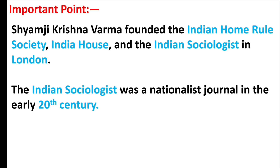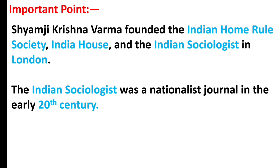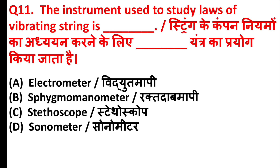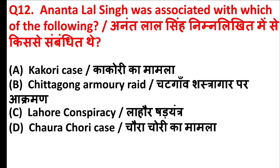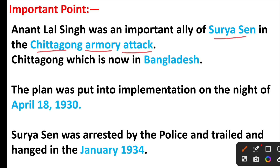The raga Miya Malhar was created by — ? The right answer is option A — Tansen. Tansen was one of the Navaratnas of Akbar and received the title 'Miya,' meaning a learned man. Tansen joined Akbar's court at the request of Raja Ram Chandra and died in Agra in 1586. The journal 'Indian Sociologist' was founded by — ? The right answer is option A — Shyamji Krishna Varma, who founded the Indian Home Rule Society, India House, and the Indian Sociologist in London. It was a nationalist journal in the 20th century.